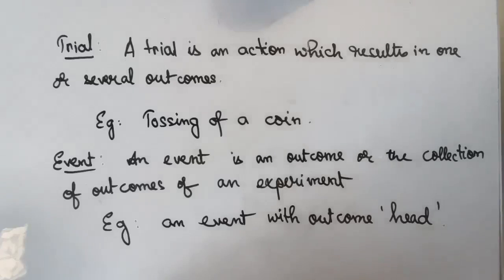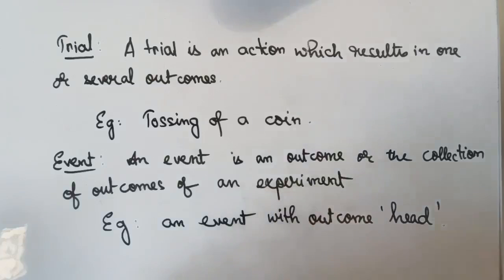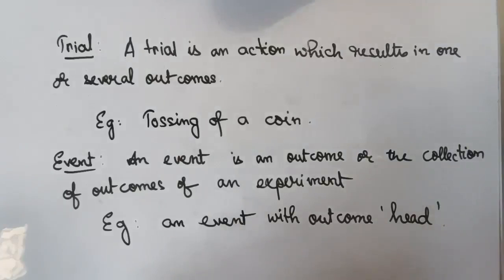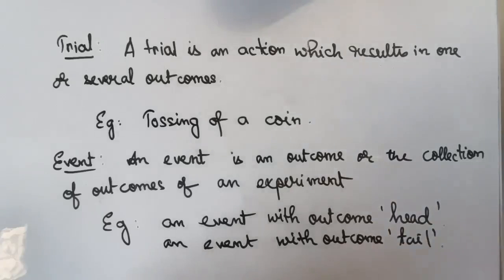The next term we are going to learn is 'event'. An event is an outcome or a collection of outcomes of an experiment. For example, when we toss a coin, getting a head is an event with outcome head, and getting a tail is an event with outcome tail. So an event is an outcome or a collection of outcomes for a random experiment.